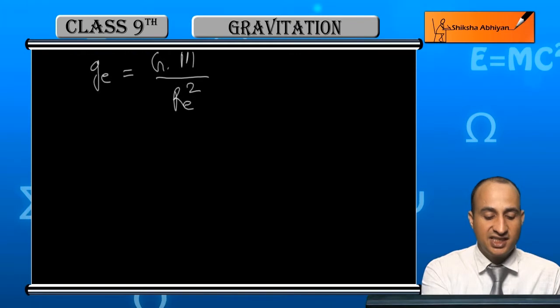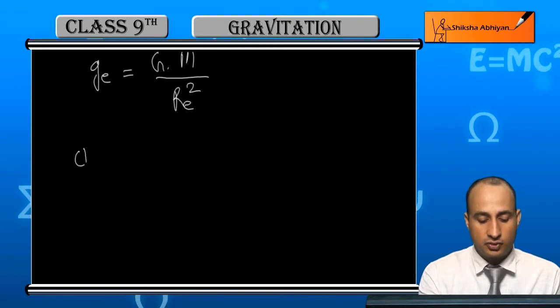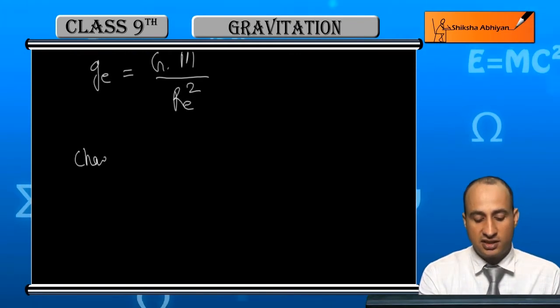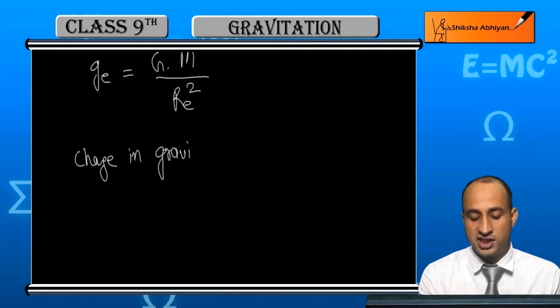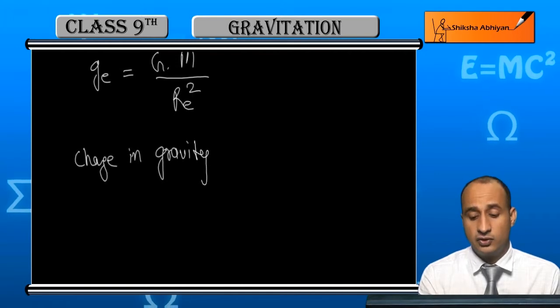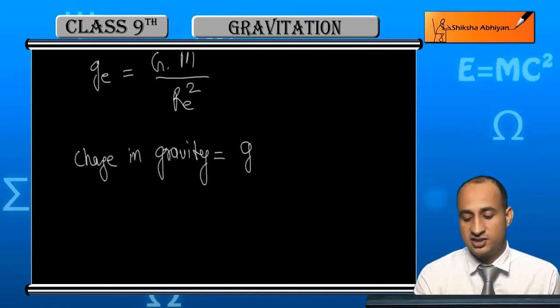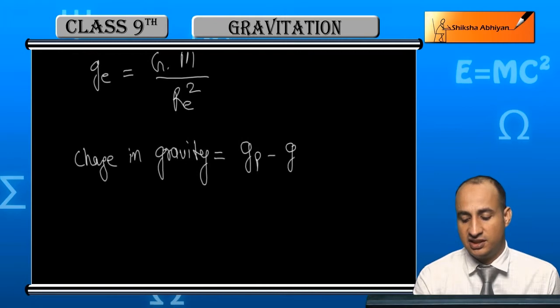Now we take the change in gravity. Change in gravity equals change in weight, which is GP minus GE.